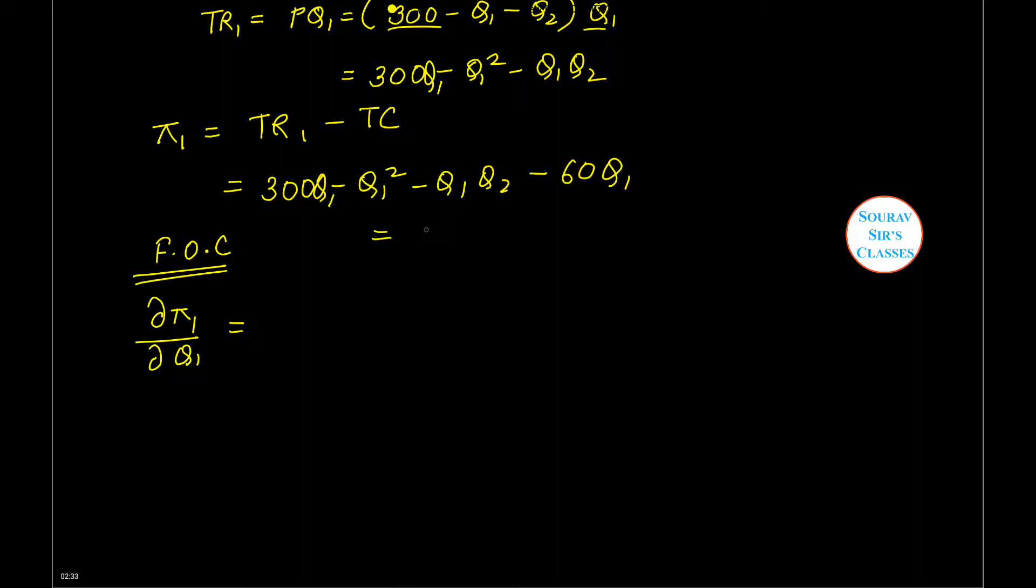I can rewrite this as 240Q1 minus Q1 squared minus Q1Q2. If I take the first order derivative of the profit function with respect to Q1 and set it equal to zero, I get Q1 equals 120 minus 0.5Q2.